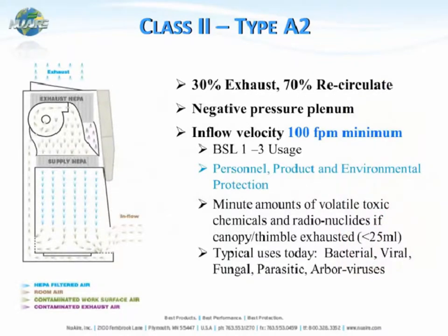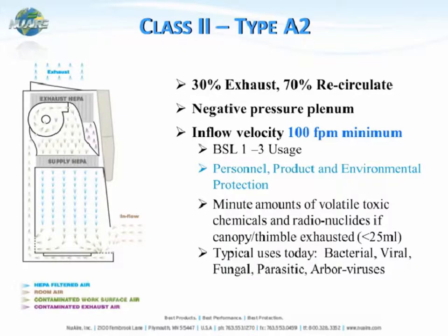Instead, the most common is the Class II Type A2. It's very similar in design in that 30% of the air is exhausted and 70% is recirculated. But the biggest difference is the inflow velocity, which is 100 feet per minute minimum. This allows use in BSL levels 1, 2, or 3. Instead of just non-volatile toxic chemicals, you can use minute amounts of volatile toxic chemicals in an A2 cabinet, as long as it is exhausted to the outside.